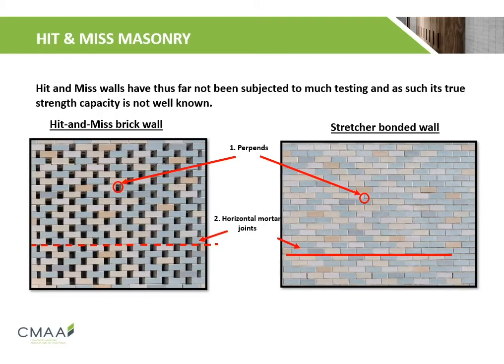Here we have a hit-and-miss brick wall on the left and a stretcher bonded wall on the right. There are a couple of differences between the two walling systems. Firstly, there are no vertical perpen joints in the hit-and-miss brick wall, while in the stretcher bonded wall the vertical joints are completely filled. Secondly, there is a void between the horizontal mortar joints in the hit-and-miss brick wall, while in the stretcher bonded wall the horizontal mortar joints are completely filled. As a result, modifications must be made to the calculations stated in AS3700.